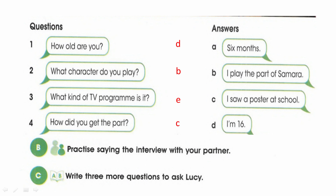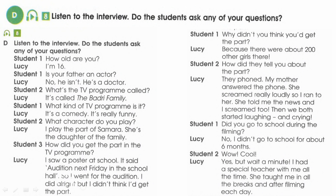Exercise B: Practice the interview with your partner. Work in pairs, take turns asking and answering questions. Exercise C: Write three more questions to ask Lucy, adding them to the existing question list. You will write these questions yourself, then we'll listen to the audio to see if any of your questions appear in it.